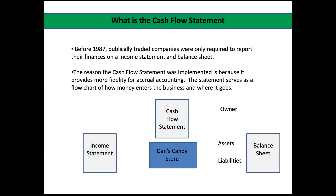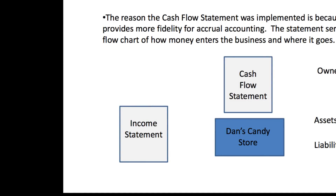So just a quick recap — the income statement, which you'll find on the bottom left there. What I'm going to use for this scenario is a basic candy store, called Dan's Candy Store. We're going to use some generic money to show how that money flows through Dan's Candy Store and what each of these three statements does. The income statement demonstrates the amount of money being generated from the operating activities of the business — the sale of Dan's Candy.